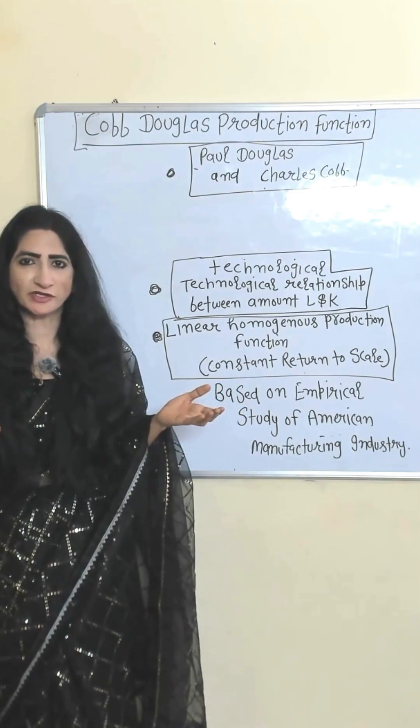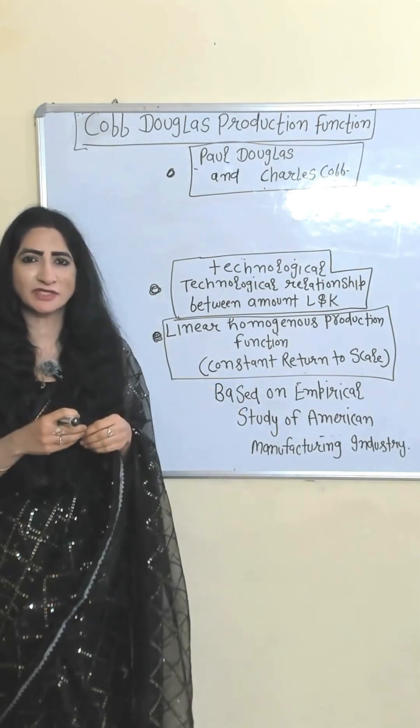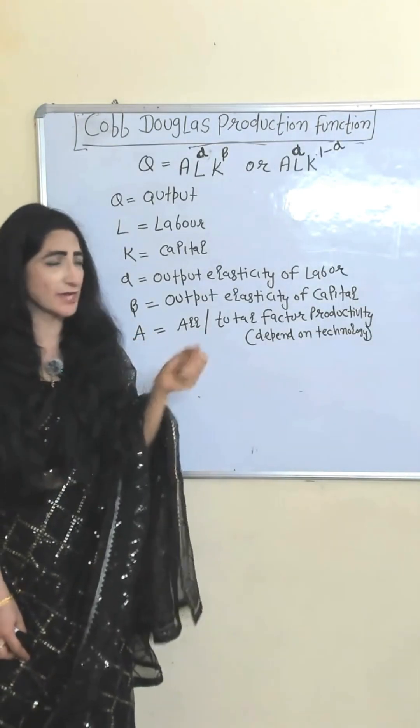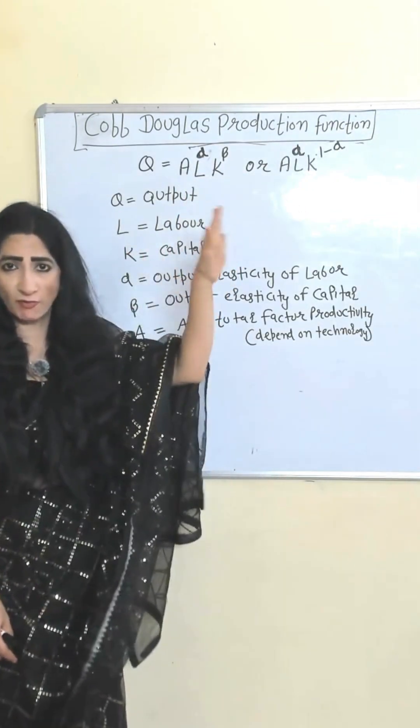This is a linear homogeneous production function that means receiving constant return to scale. We can represent this production function by two ways. Either this or this, meaning of both are the same.